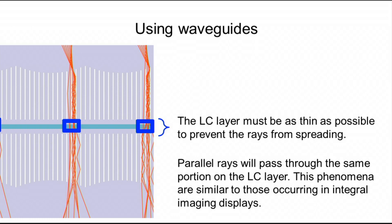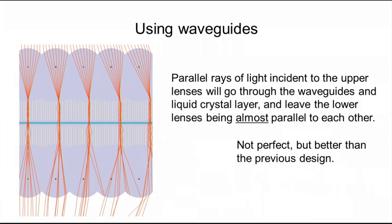In this design, it is quite important to keep this intermediate layer as thin as possible because it's a source of scattering the light. Parallel rays of light coming from above will go through approximately the same portion on the LCD liquid crystal layer. This phenomenon is quite similar to those occurring in the integral imaging system.